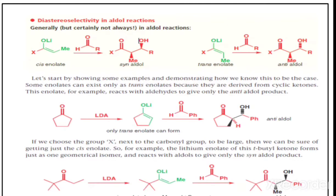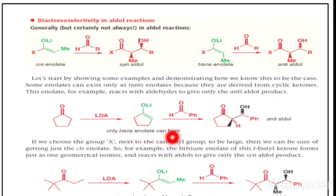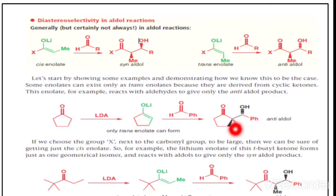Some enolates can exist only as the trans enolate because they are derived from cyclic ketones. For example, cyclopentanone treated with LDA abstracts the proton to give the enolate. Because this compound is cyclic, only the trans enolate can form. This trans enolate reacts with the aldehyde to give only the anti aldol product — consistent with the rule that trans enolate gives anti aldol.